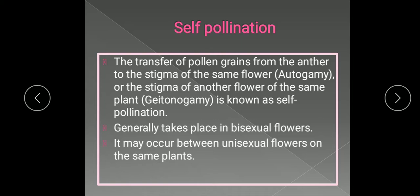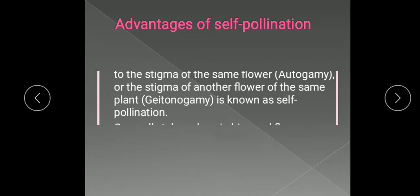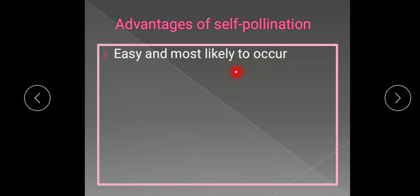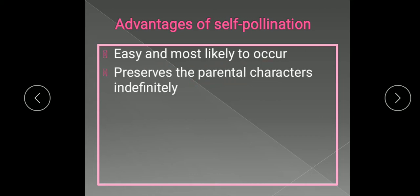Because of the identical genetic constitution, the new plants produced after self-pollination resemble the parent plant. Now let's study the advantages of self-pollination. Self-pollination is easy and most likely to occur because the stamens — the male part — and carpels — the female part — both mature at the same time. It also preserves the parental characters indefinitely.